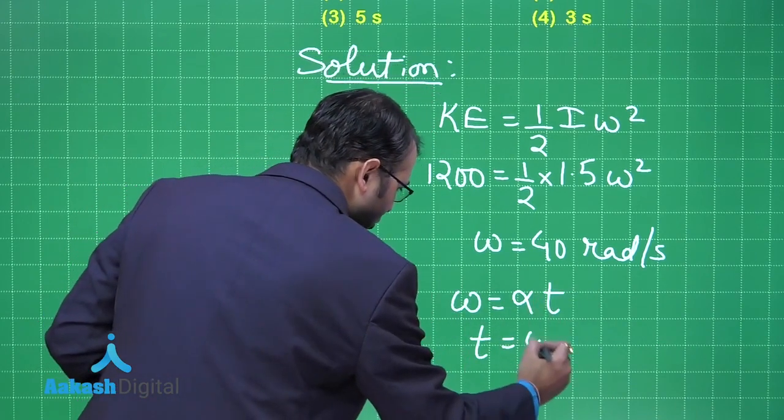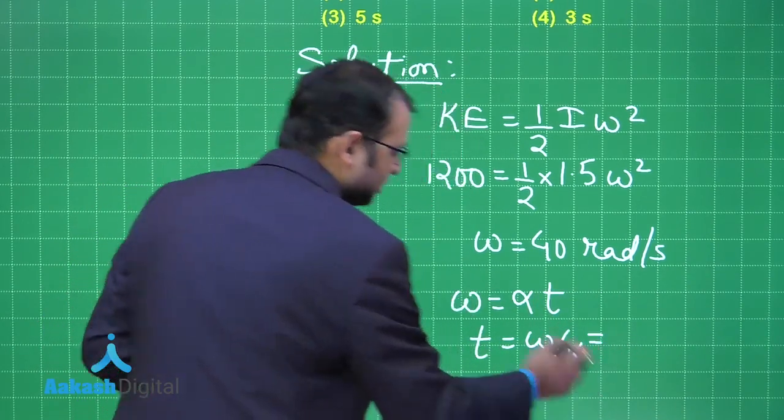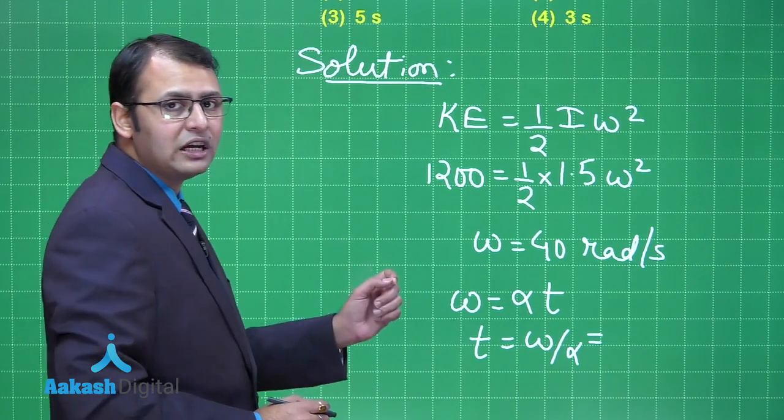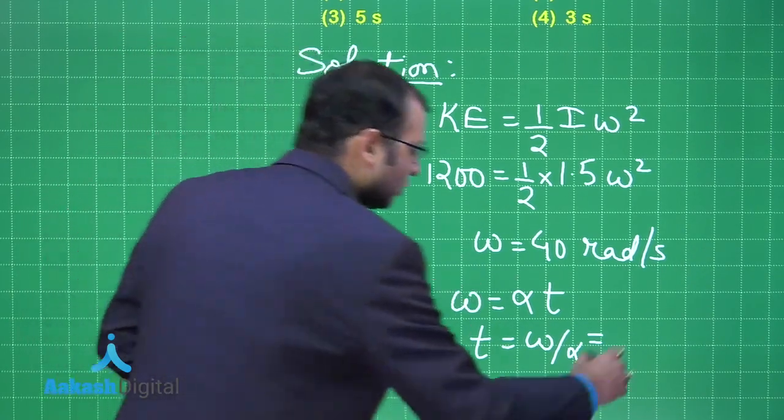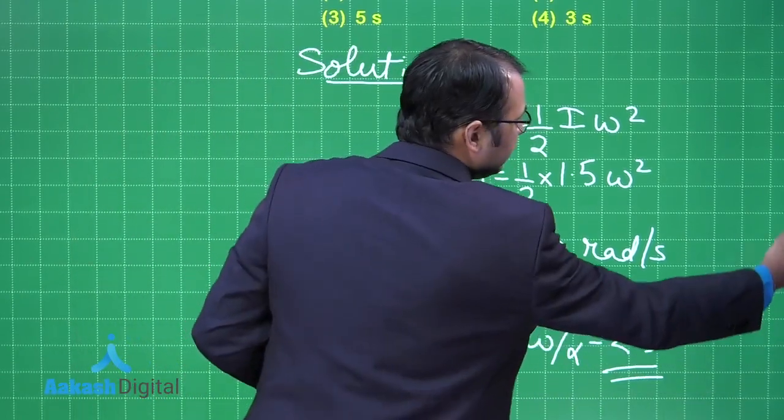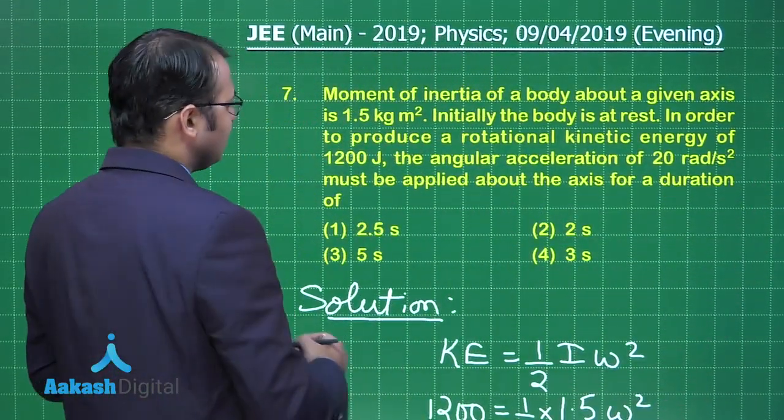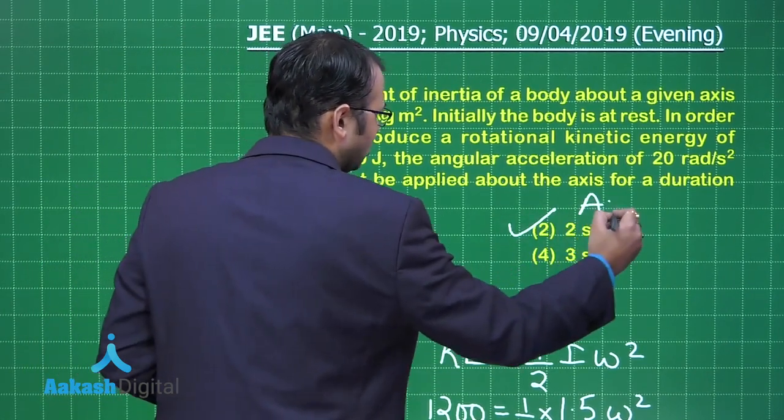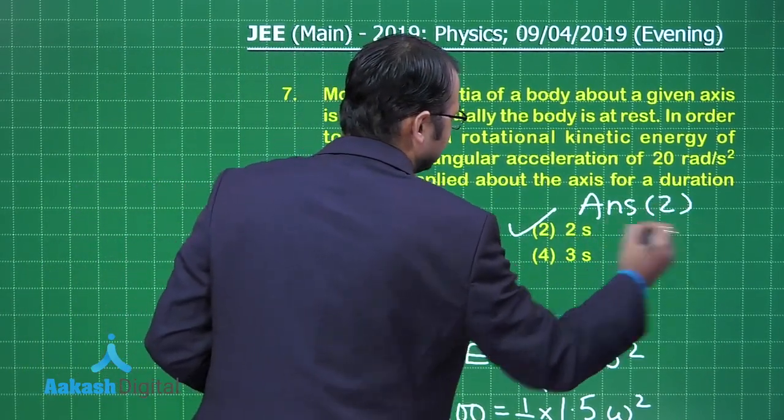Now this omega can be written as alpha t, so t would be equal to omega by alpha. What is the value of alpha? That is 20 radian per second square, and omega is 40. So this answer would be 2 seconds. Let's see which is the best suited option here. So among the four options given to us, yes, option number two would be the right answer.